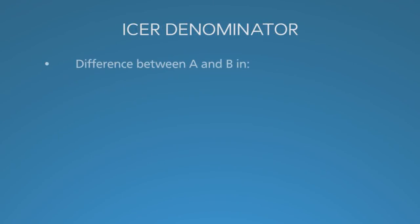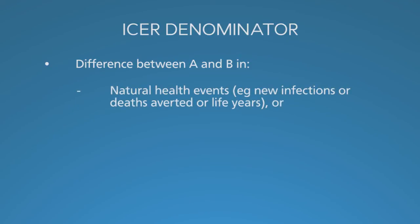The denominator is the difference between options A and B in terms of one of several possible measures of health. In one cost-effectiveness report, you can examine multiple outcomes. Examples of natural health events are new infections, deaths averted, life years, or disease episodes. It's important to present the effectiveness of the program in terms of outcomes that people can understand, particularly when presenting to clinicians and other non-economists. Everyone can understand if you say it costs $1,000 to avert a new infection, or $500 to prevent a death, or $50 per added life year.